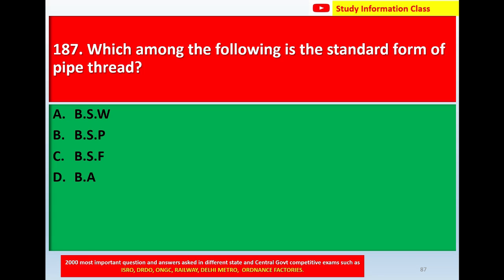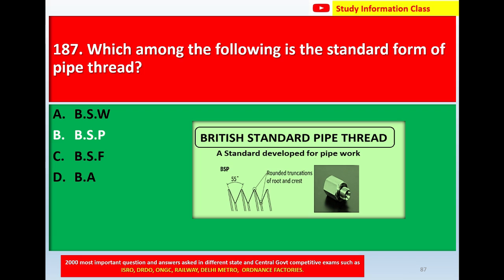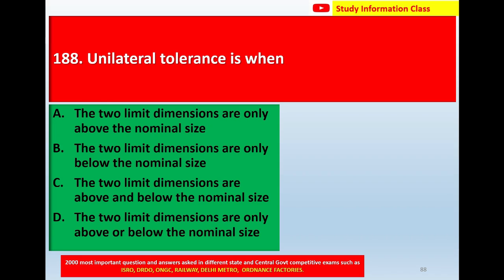Next, question number 187: Which among the following is the standard form of pipe thread? Option A: BSW, option B: BSP, option C: BSF. The correct answer is BSP — British Standard Pipe thread, a standard developed for pipework, with a 55-degree thread angle. For question 187, the correct answer is BSP.